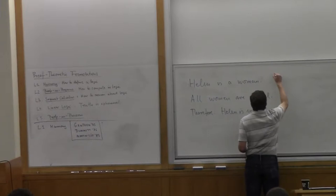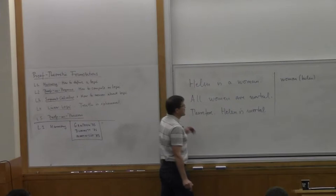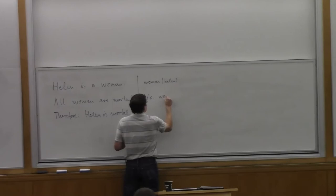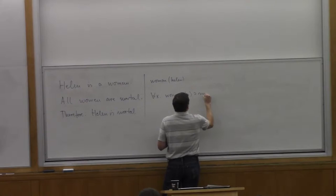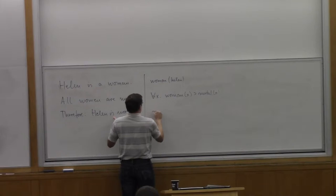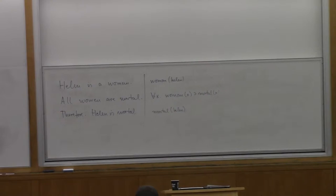We can ask whether the deduction from these two lines to that third line is a valid deduction. But we're still talking about very concrete sentences. We're talking about Helen of Troy, about mortality. That's not really what logic is about. If we talk about this in logic, we'll first abstract over this. We write it in a formal language, and we reason within that formal language. The first step would be to introduce a predicate.